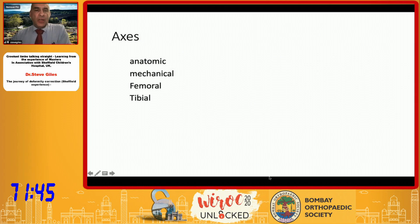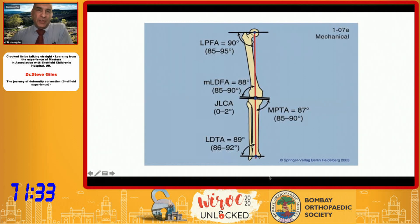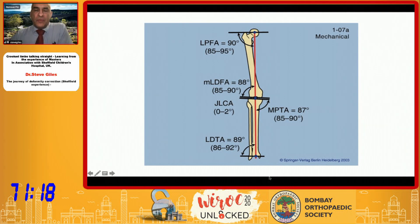A lot of the time we use mechanical axes, but the anatomic and mechanical axes are not necessarily the same in the femur and tibia. This is probably one of the most important slides — it gives an idea of what you would expect normal alignment to be in a mechanical axis view: the axis from the centre of the femoral head down to the centre of the ankle passing through the centre of the knee. Be aware that this assumes there are no problems within the knee joint.